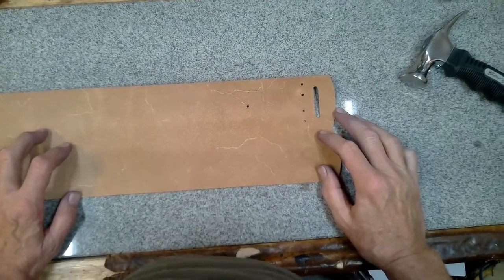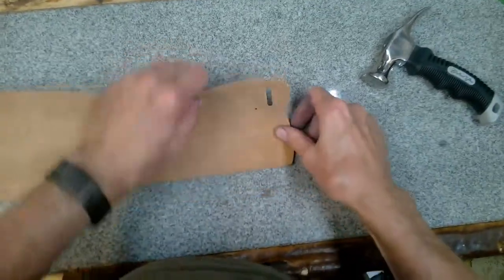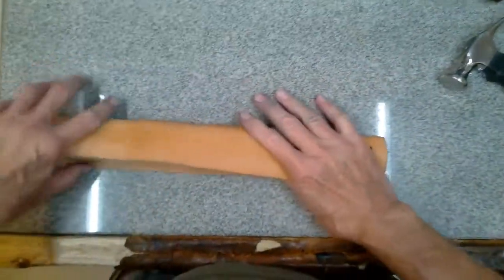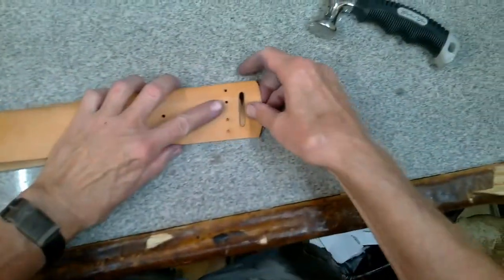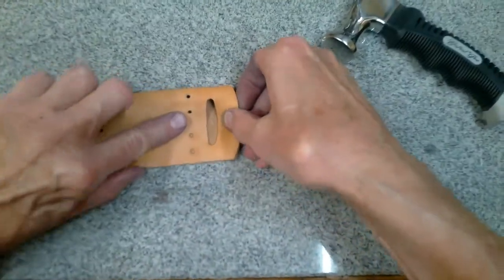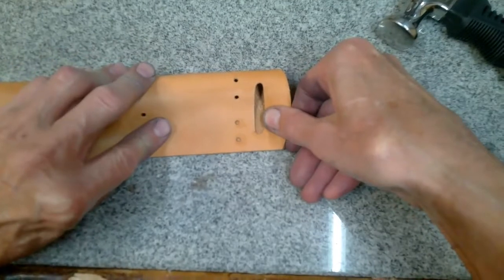To get the best fold in the money belt, dampen the leather slightly, front and back. Then roll it up and wrap it in plastic so the moisture can work its way through the leather. This is called casing the leather.